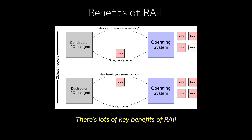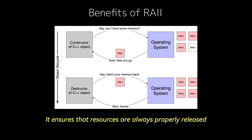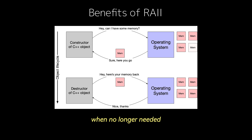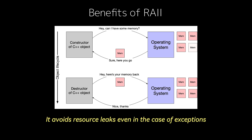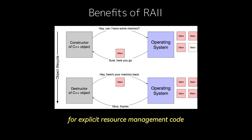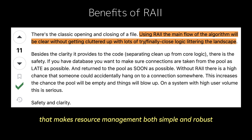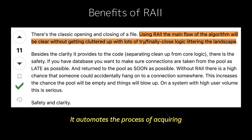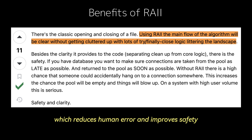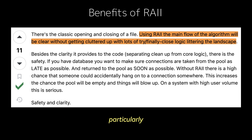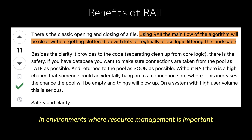There are lots of key benefits of RAII. It ensures that resources are always properly released when no longer needed, it avoids resource leaks even in the case of exceptions, and it minimizes the need for explicit resource management code, which makes the codebase cleaner and easier to maintain. RAII is a powerful and elegant technique that makes resource management both simple and robust. It automates the process of acquiring and releasing resources by tying them to the lifetime of objects, which reduces human error and improves safety, particularly in environments where resource management is important.